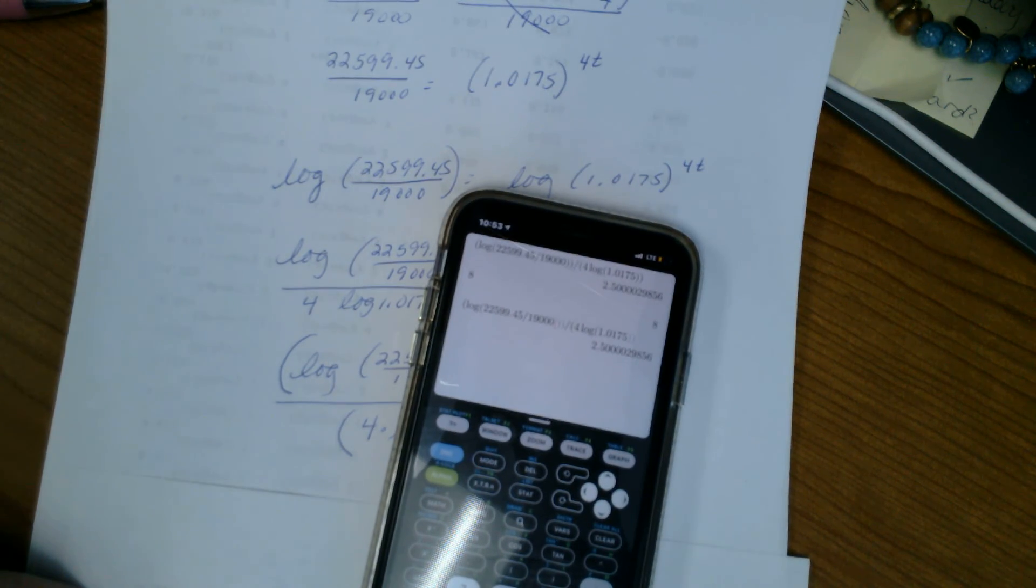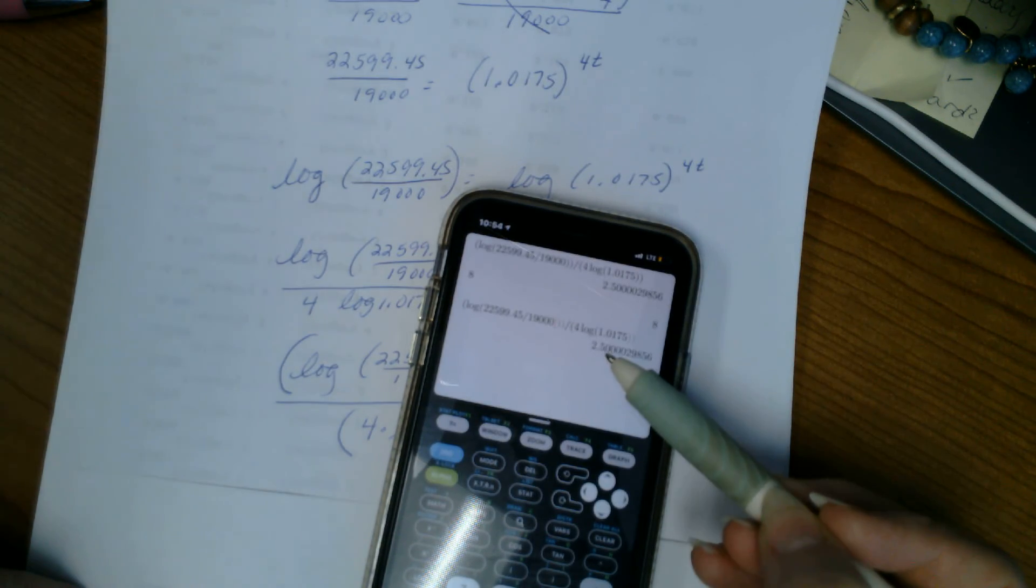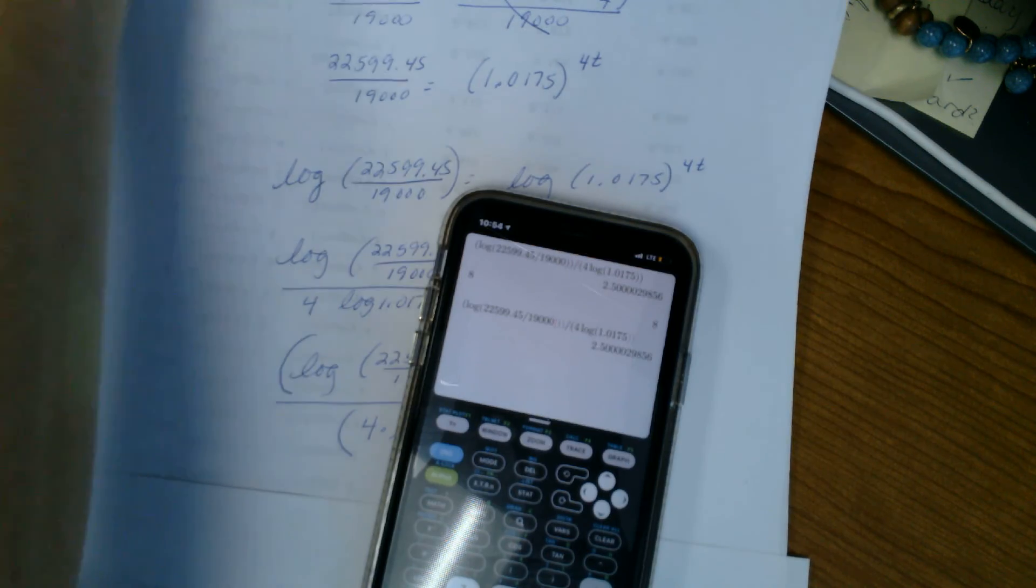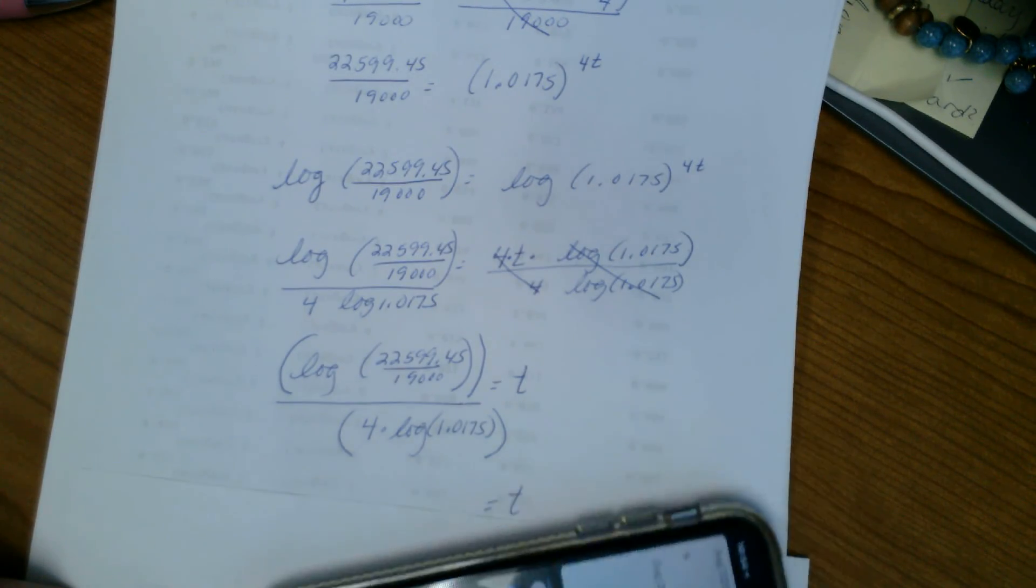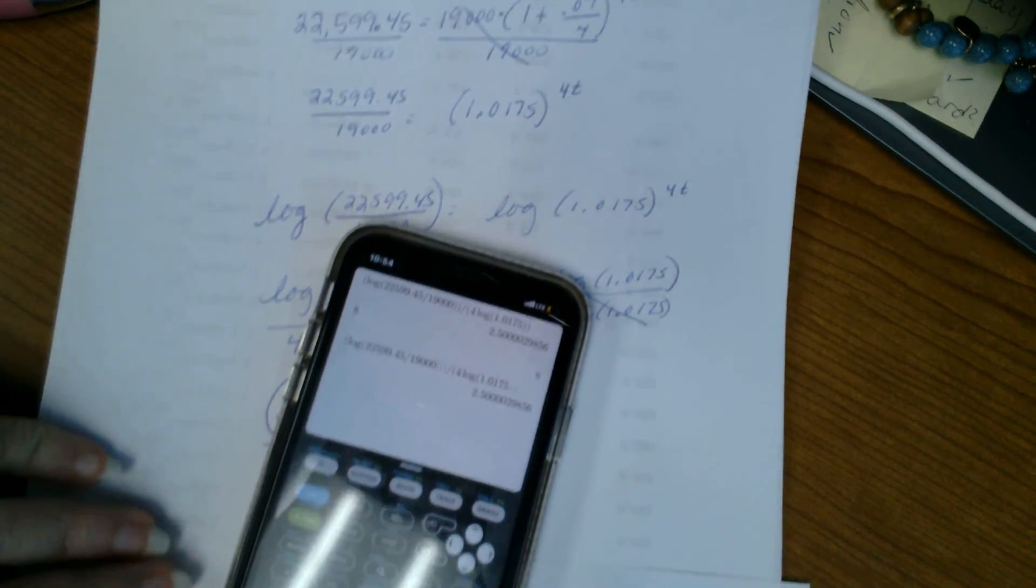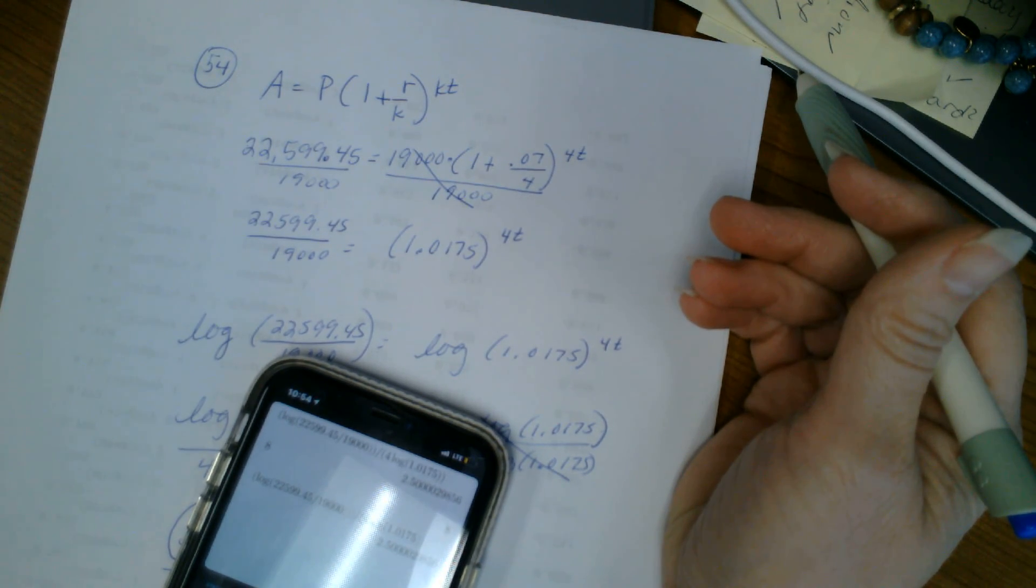So to get all that typed in right, you should get in this case 2.5. It says round to the nearest tenth, so 2.5 would be my answer. And that stands for t, amount of years. And so it takes 2.5 years at 7% compounded quarterly, all the stuff we said up there, for that money to grow at that rate.